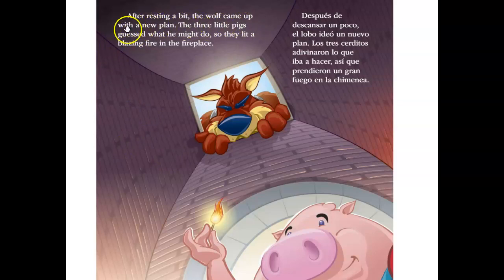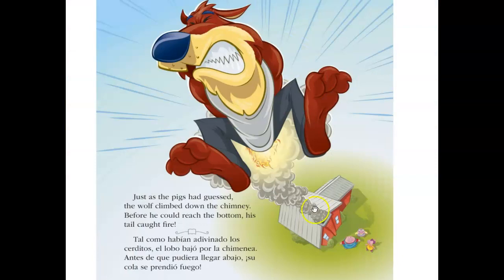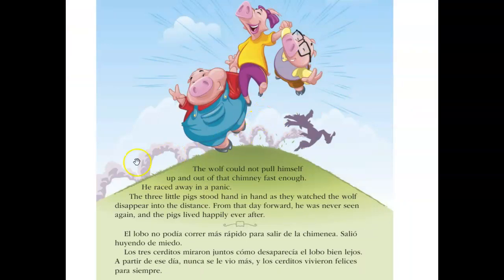After resting a bit, the wolf came up with a new plan. The three little pigs guessed what he might do, because they're smart little pigs, so they lit a blazing fire in the fireplace. Just as the pigs had guessed, the wolf climbed down the chimney, but before he could reach the bottom his tail caught fire. The wolf could not pull himself up and out of that chimney fast enough — he raced away in a panic. The three little pigs stood hand in hand as they watched the wolf disappear into the distance. From that day forward he was never seen again, and the pigs lived happily ever after.